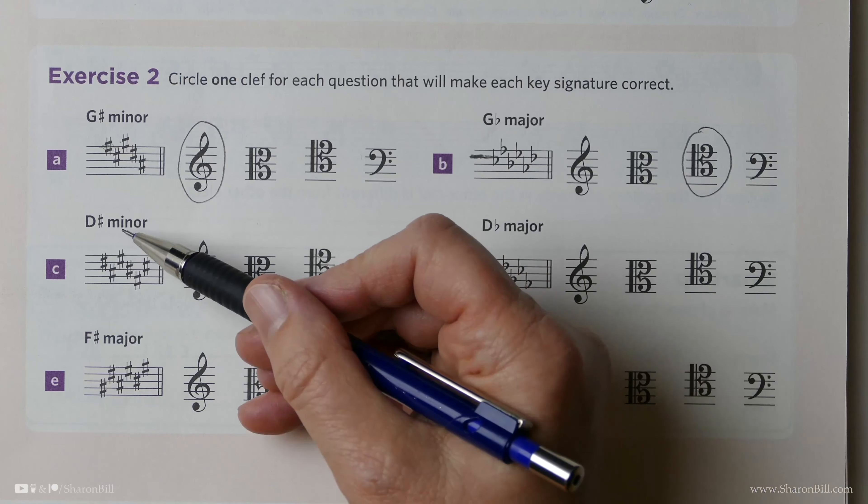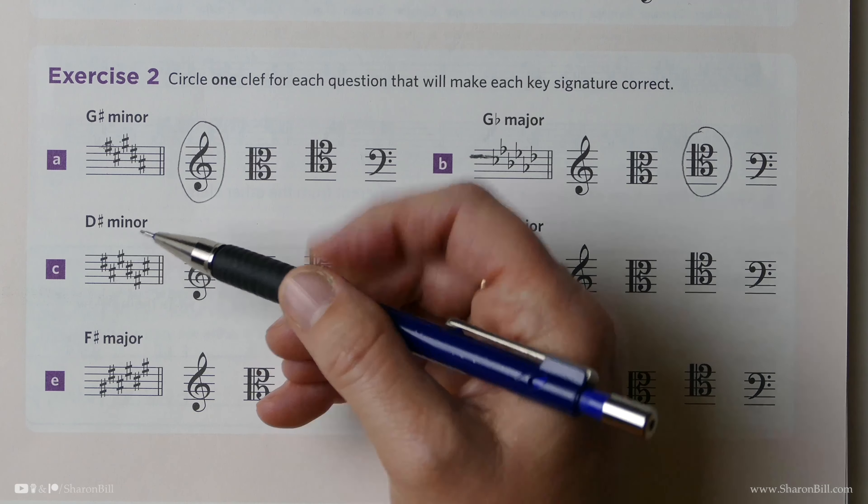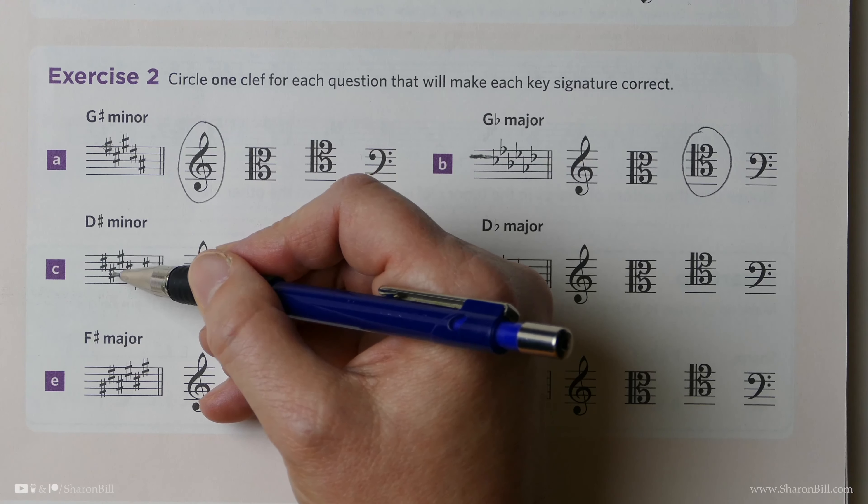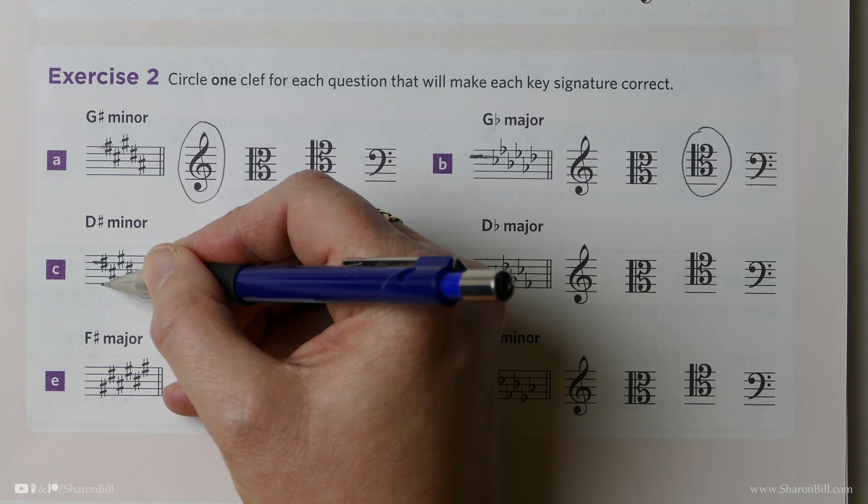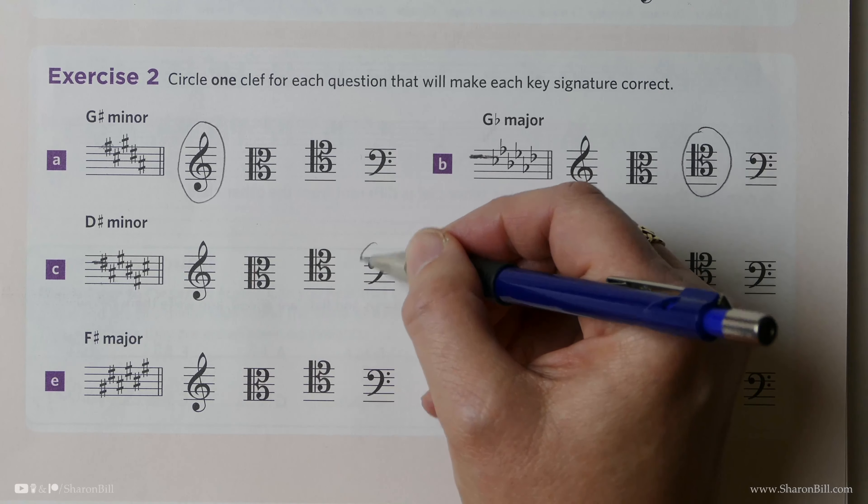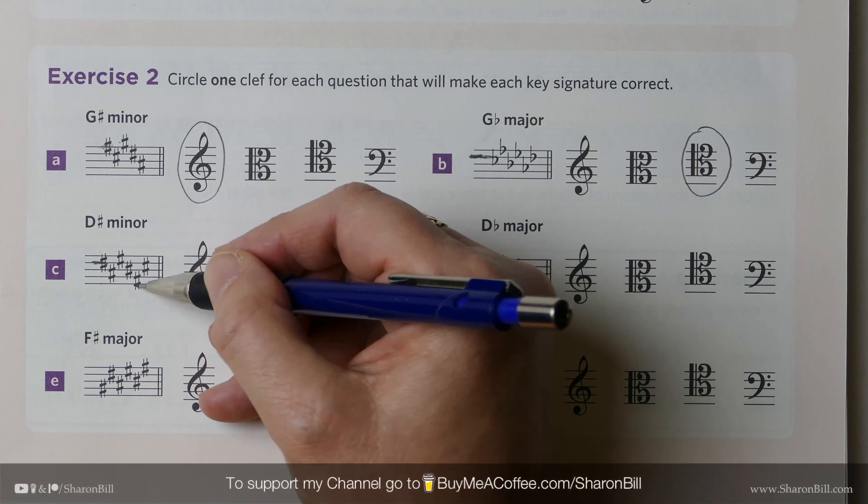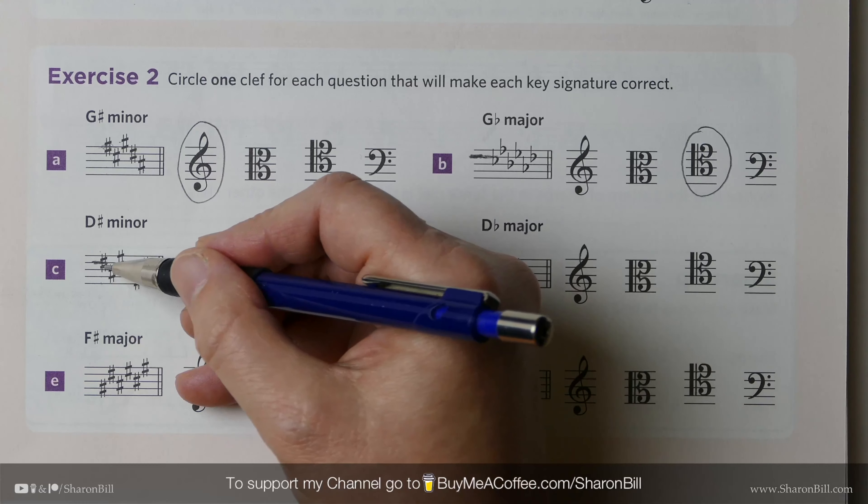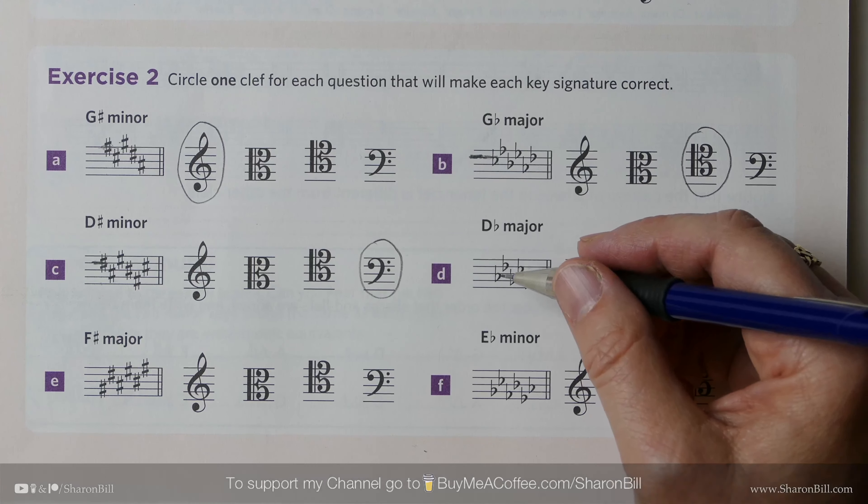D sharp minor, so D sharp minor is related to F sharp major which has a key signature of F, C, G, D, A, E sharp but always the first sharp has got to be F sharp, and so for this to be F sharp, that's going to have to be bass clef good boys deserve football, and then the rest will fall in there that would be C, G, D, A, E so that's why we need that bass clef.